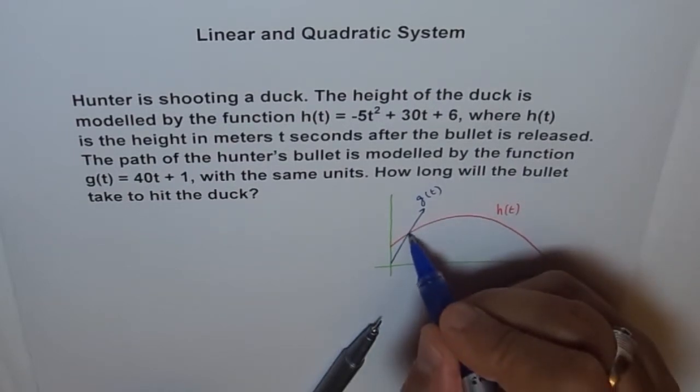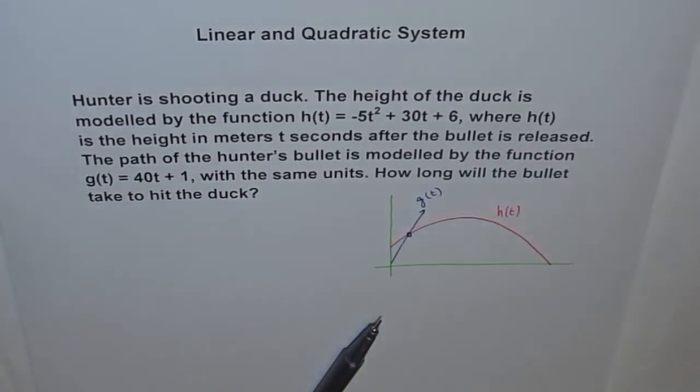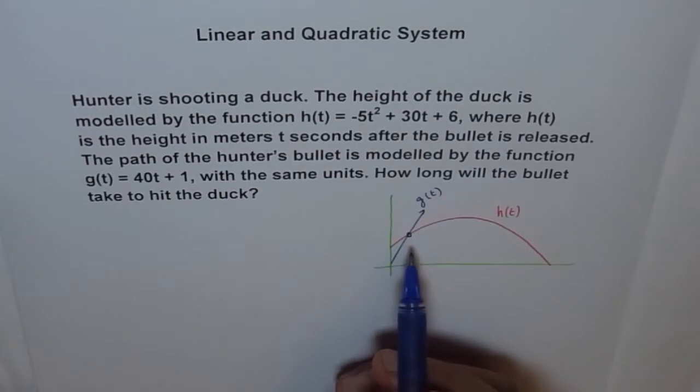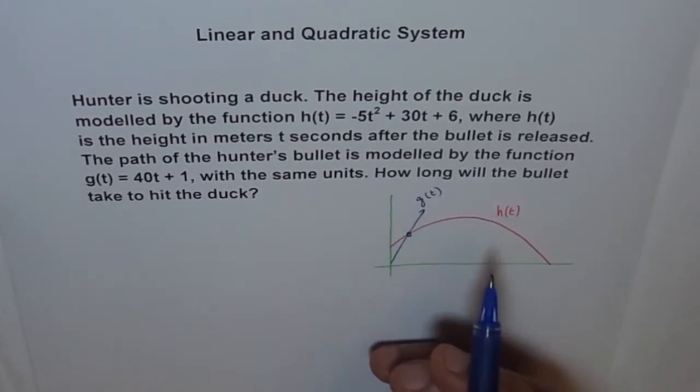Now what is happening is we are interested in this point where the bullet hits the duck. So let's see how to find this point from the given equation. As you can see from here, at this particular point, h(t) is equal to g(t). Both are same.